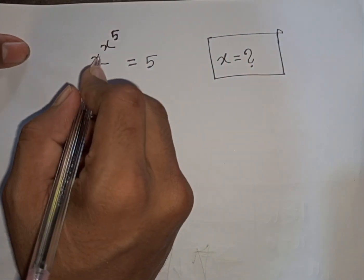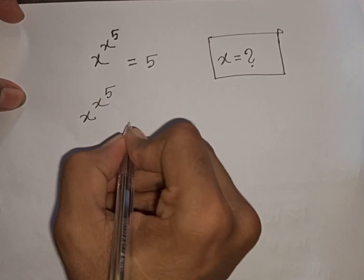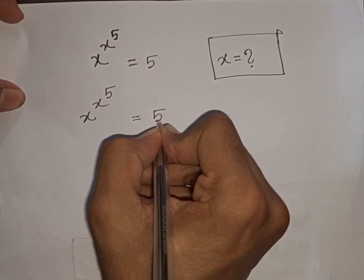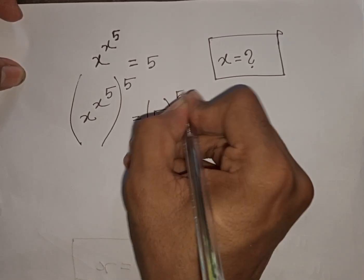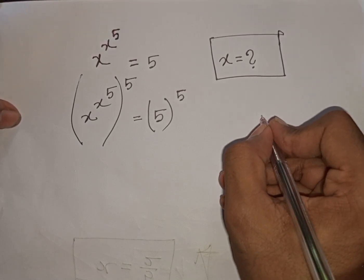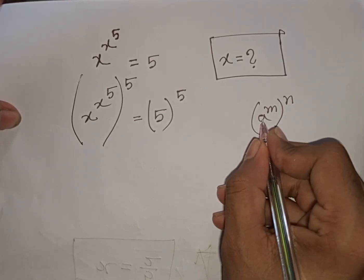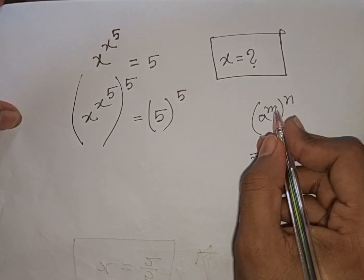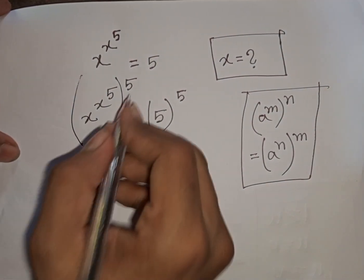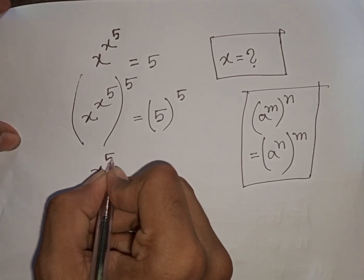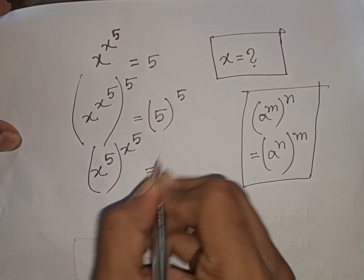Now, how to solve x power (x power 5) equals 5. Find the value of x. We multiply both sides by x power 5. Applying the exponential rule (a^m)^n = (a^n)^m, we get (x^5)^(x^5) equals 5^5.